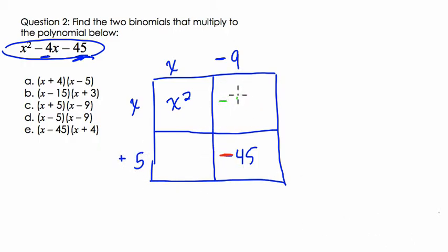So in this upper right region, it's negative 9x. Negative 9 times x is negative 9x. In the lower left region, it's 5 times x, so it's 5x. Now what happens when we add these two and simplify, just to check that we have the right value?